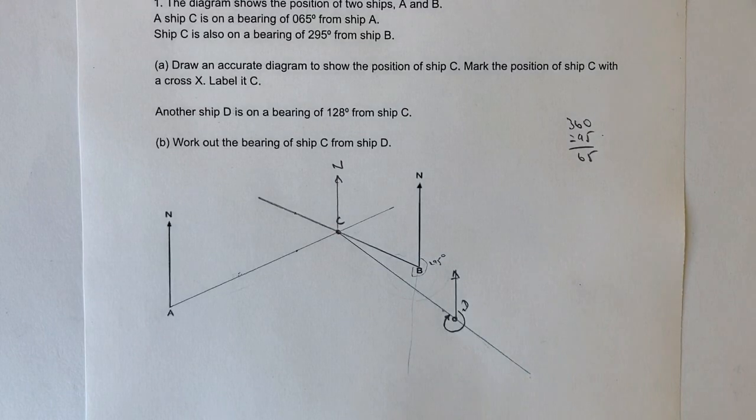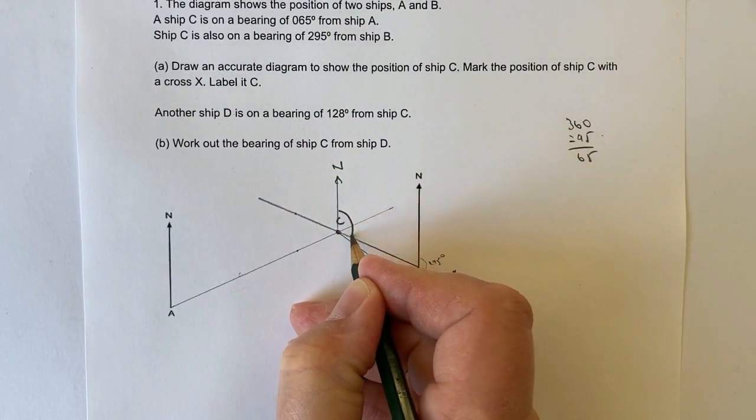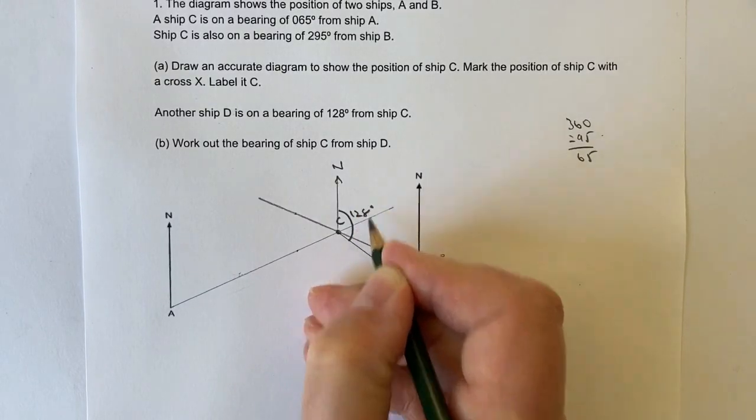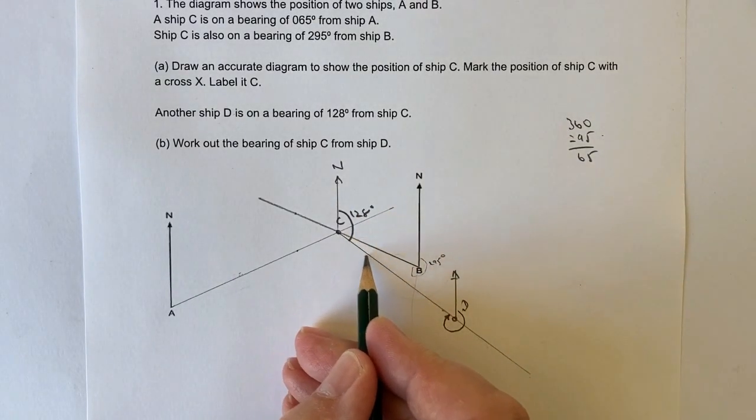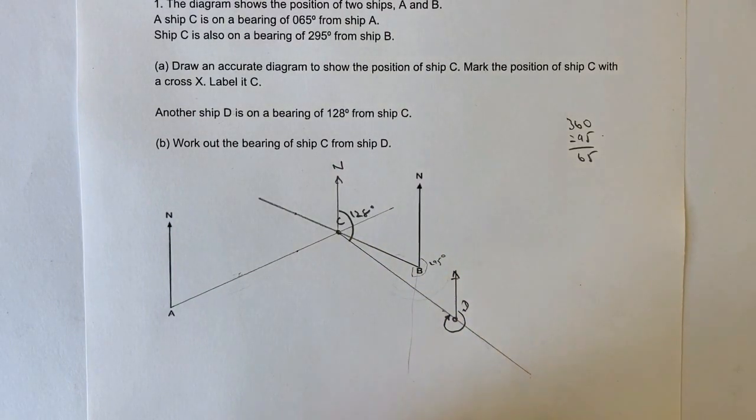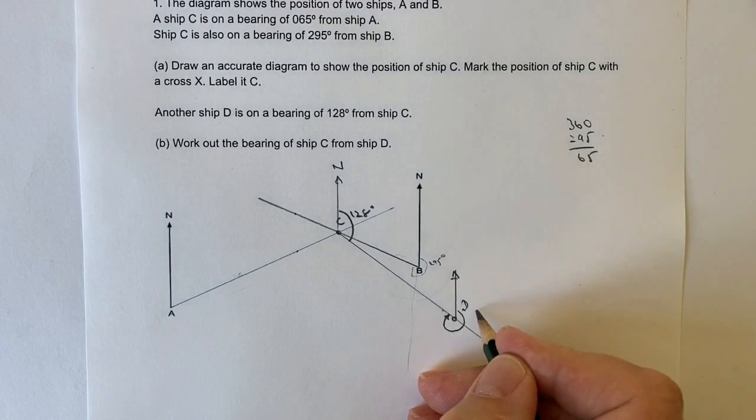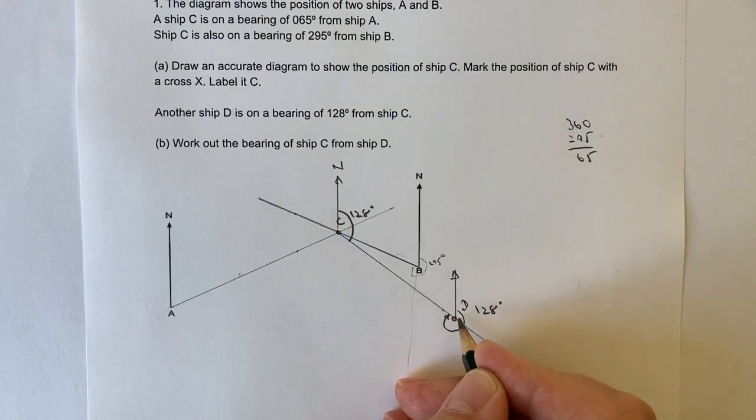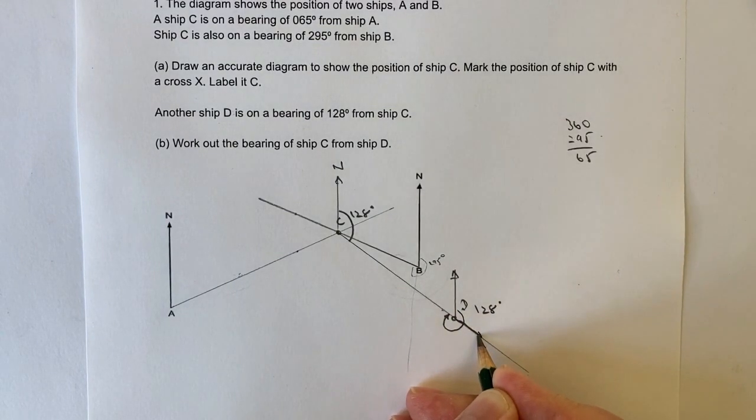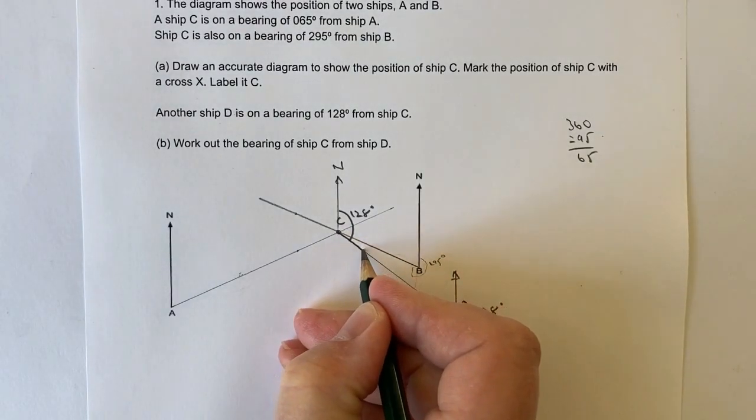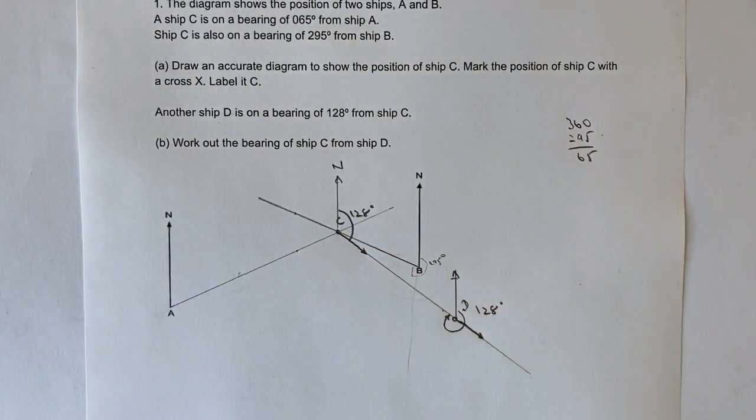So there's a couple of things that we need to be aware of. And this is where a couple of different techniques come into play. So if you can imagine that if ship D is on a bearing of 128 degrees from ship C, it means that this angle here is 128 degrees. So hopefully you can see that goes then to this line, which is going to go down to here. And because of corresponding angles, this is also 128 degrees. So this angle along here is going to be the same as this angle along here because of corresponding angles.